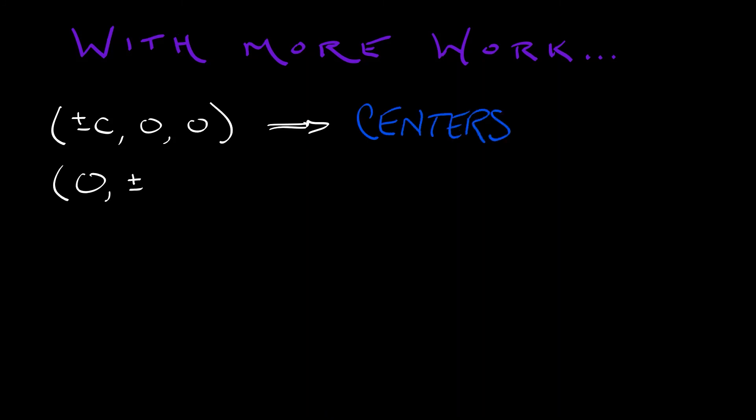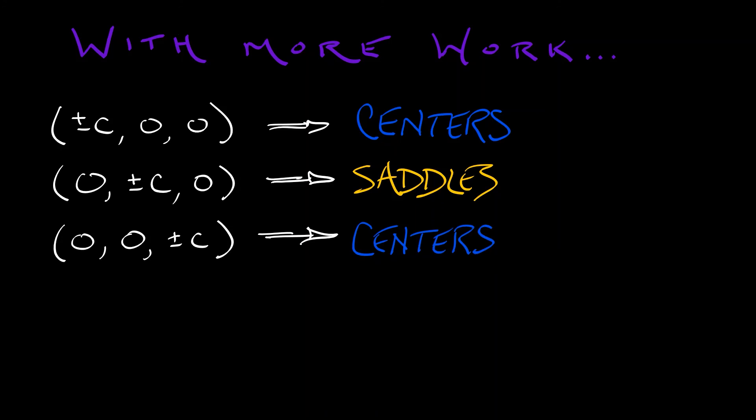At zero plus or minus c, zero, that is rotating about the y-axis, we have saddles in that complementary direction. But at zero, zero plus or minus c, rotating about the z-axis, we again get centers.